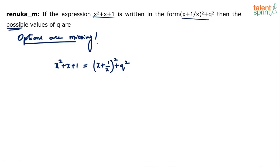It's simple — substitute some value in place of x. This turns it into an expression only in terms of q. Solve for q and that's your answer. Then substitute the same x value in the options to see which one matches.